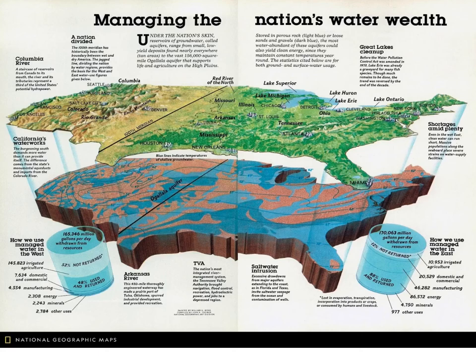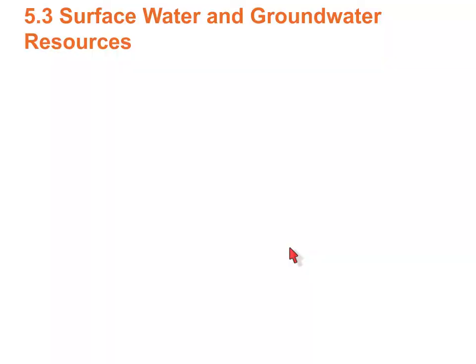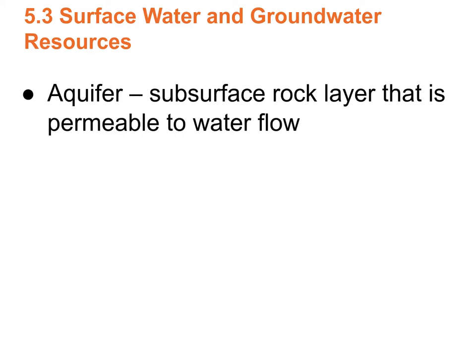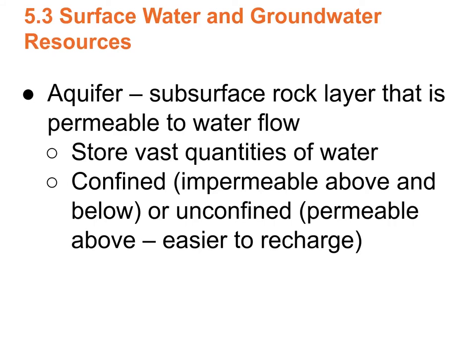This old National Geographic map shows aquifers across the United States, including the 100th Meridian — that magic line. East of the 100th Meridian, you get enough rain year-round and don't need to irrigate; west of it, you have to irrigate if you want crops. An aquifer is a layer of rock permeable to water — sandstone is an example. They can store vast quantities of water, and they can be confined, with an impermeable layer above and below, or unconfined.